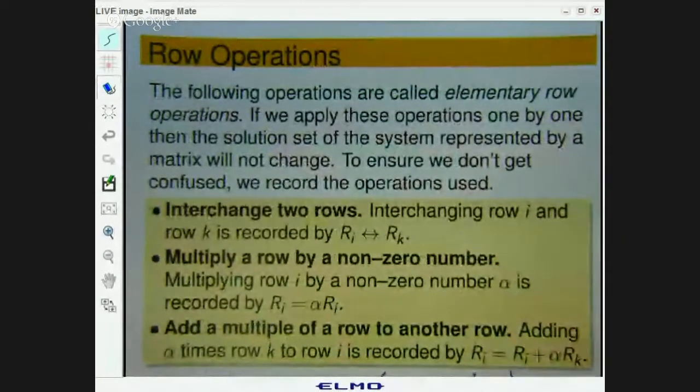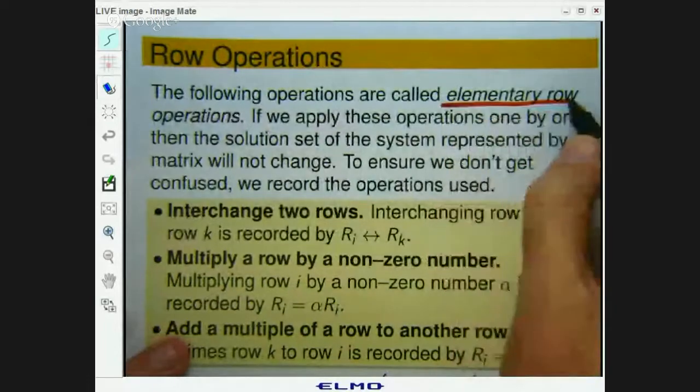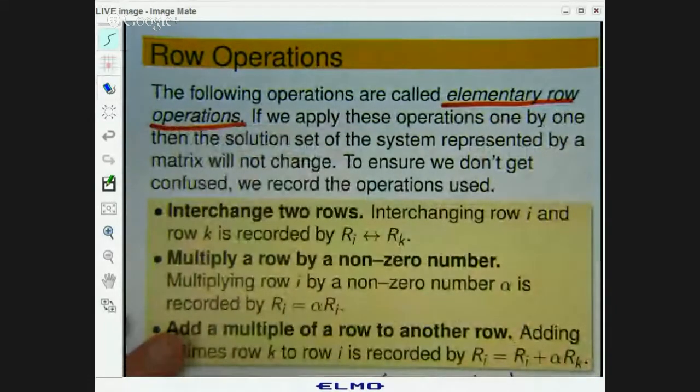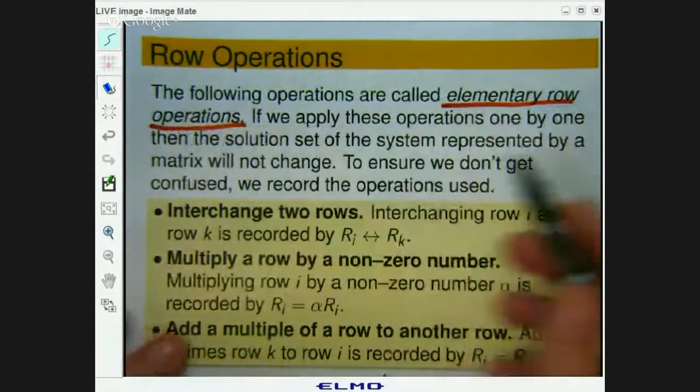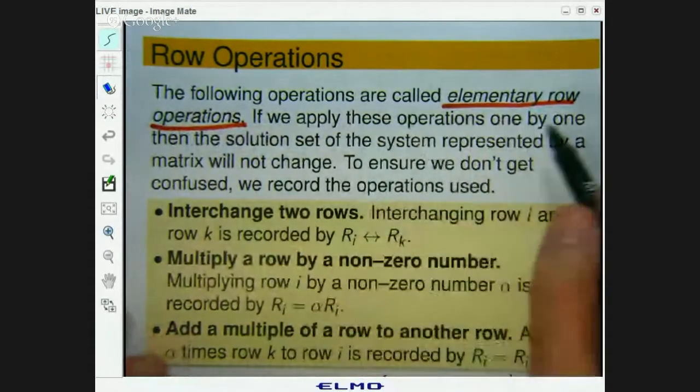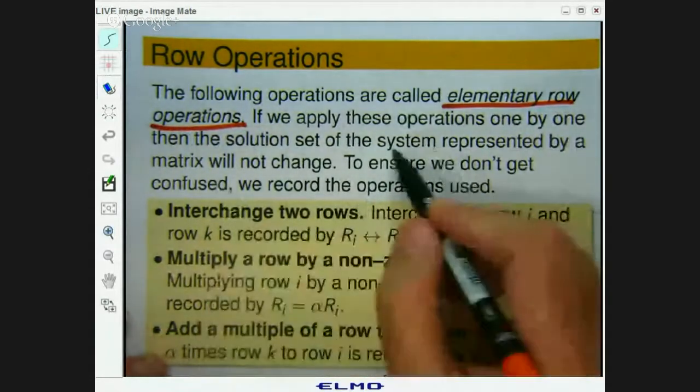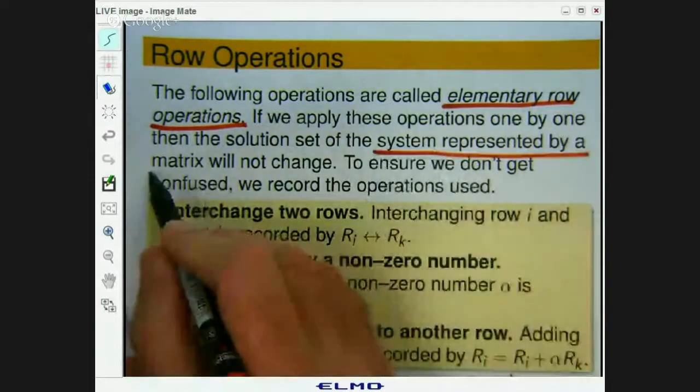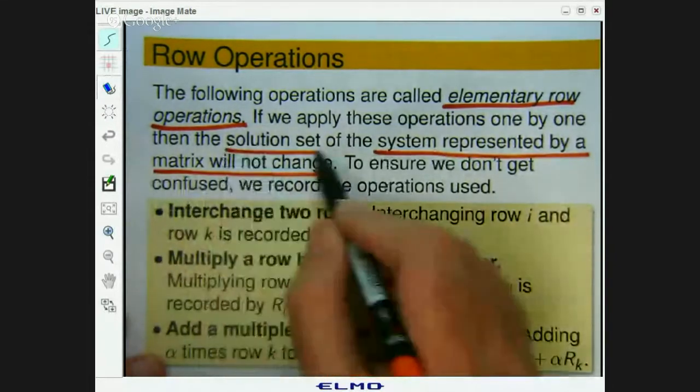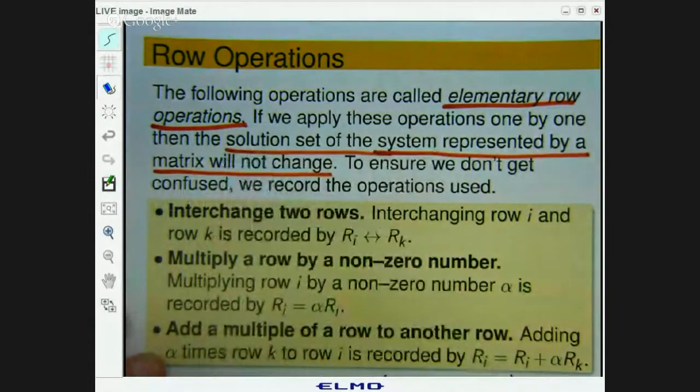Alright. So the following operations are called row operations. And what happens is if you apply these row operations one by one, then the system, the solution set of the system will not change. So what you're doing, you're taking something complicated and you're reducing it to something simple from which you can make some sort of conclusion.